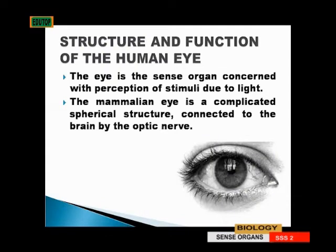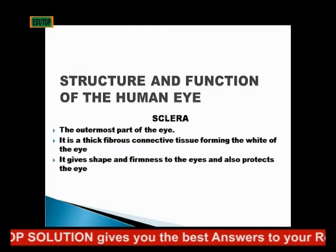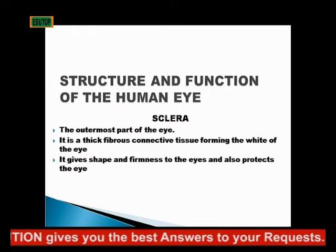The eye is a sense organ concerned with perception of stimuli due to light. The eye is very sensitive to light. The mammalian eye is a complicated spherical structure connected to the brain by the optic nerve. I was talking about the various parts of the eye with their functions.